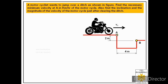We are asked to find the necessary minimum velocity at A for the motorcycle, that is vx, which will help the motorcyclist jump the ditch. Next, we have to find the inclination and the magnitude of the velocity of the motorcycle just after clearing the ditch, meaning at point B.